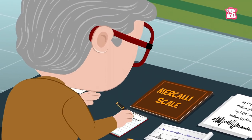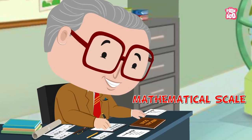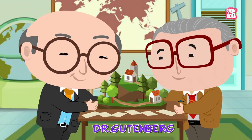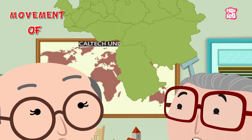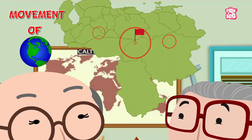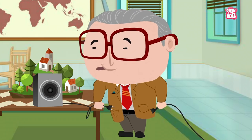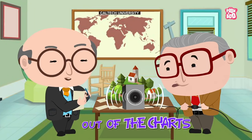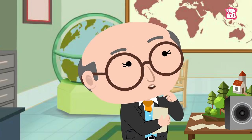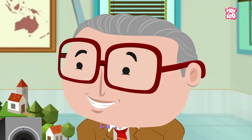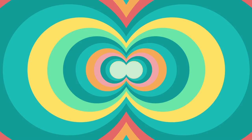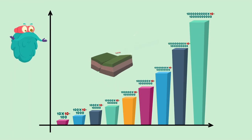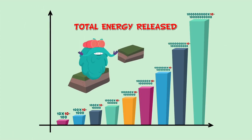Hence, he decided to create a mathematical scale to measure earthquakes. One day while working with his colleague Dr. Gutenberg, they came across a study that plotted the movement of Earth against the distance from the epicenter of the quake. They tried to duplicate the results, but the range was going out of the charts. It was then that Dr. Gutenberg suggested making the graphs logarithmic. Each point on the scale increases by a factor of 10 and is based on the total energy released by an earthquake.